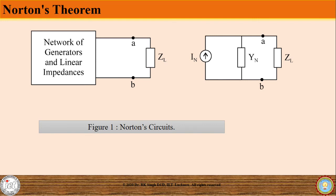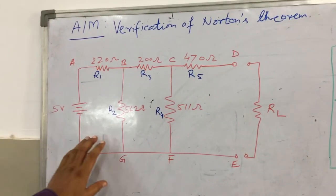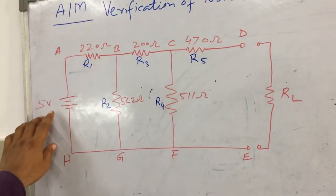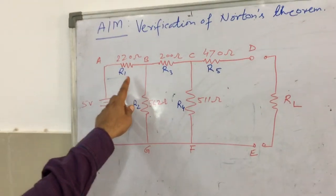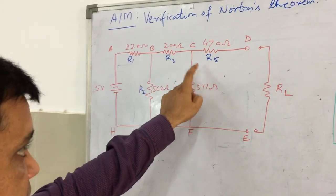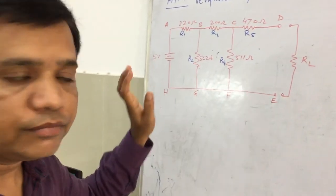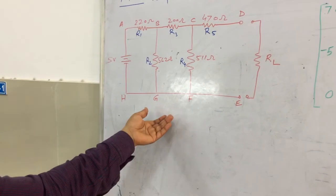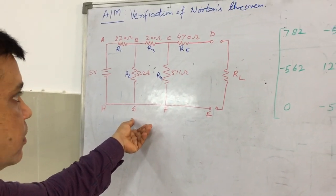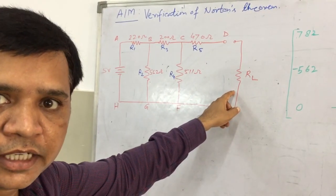That is all about Norton's theorem. In order to verify it, we have taken an example circuit having a 5V DC supply connected with a network of resistances R1, R2, R3, R4, and R5. A load resistance is connected across the output terminals of the given circuit. We will find the current flowing through this load resistance by analytical method.